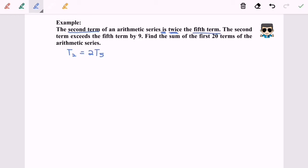The second condition is that the second term exceeds the fifth term by 9, so T2 minus T5 equals 9. We need to find the sum of the first 20 terms.